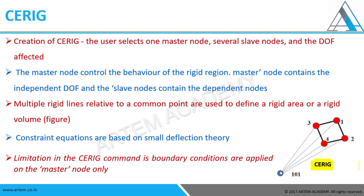Multiple rigid lines related to a common node are used to define the rigid area - for each node, multiple rigid lines are created where it should act as one unit. All dependent, that is slave, nodes should undergo the same deformation. Constraint equations are always based on small deflection theory. The limitation of the CE-rigid command is that boundary conditions are applied to the master node only. Whatever load or boundary conditions we apply, it will get transferred to the slave nodes.